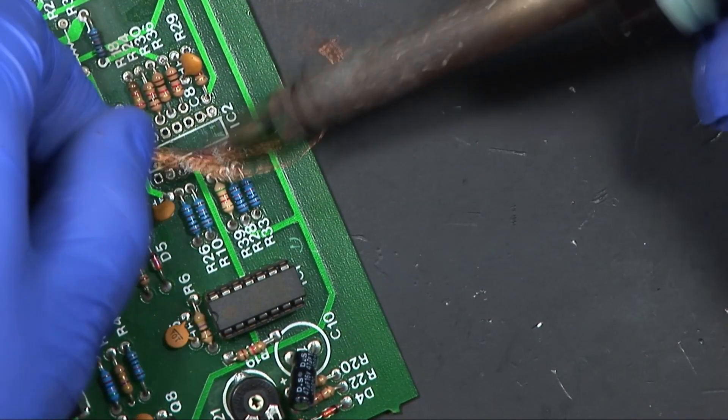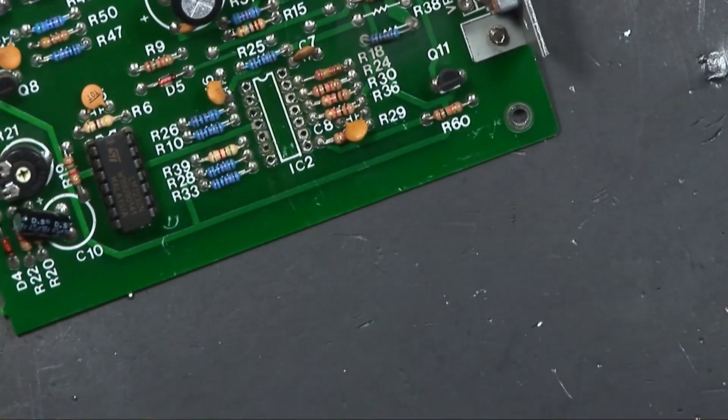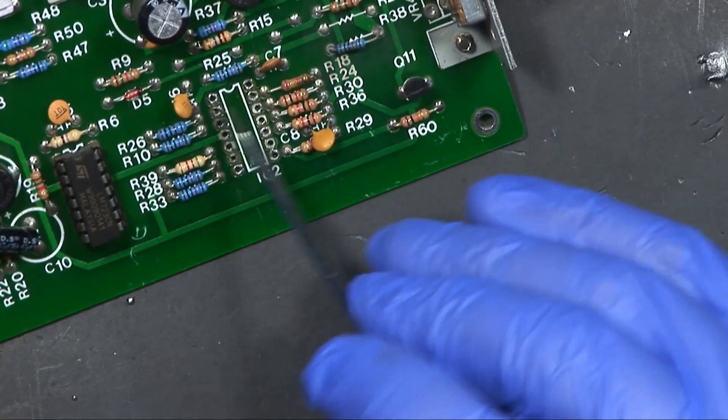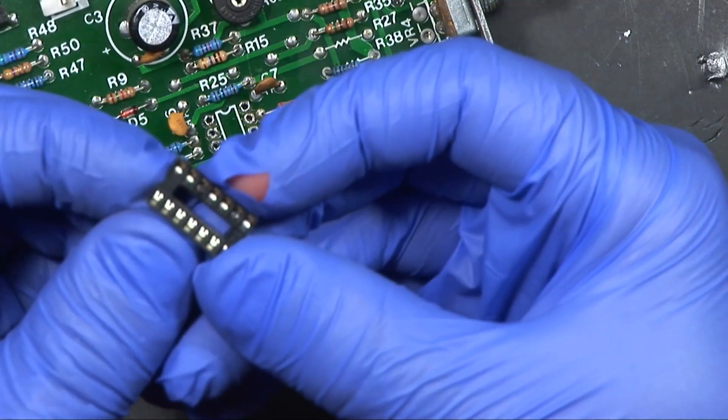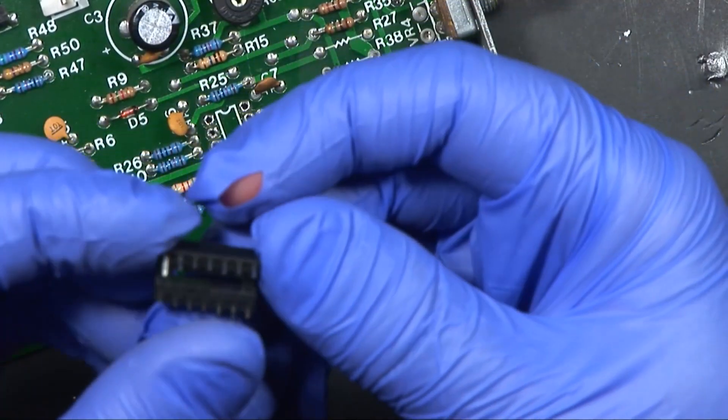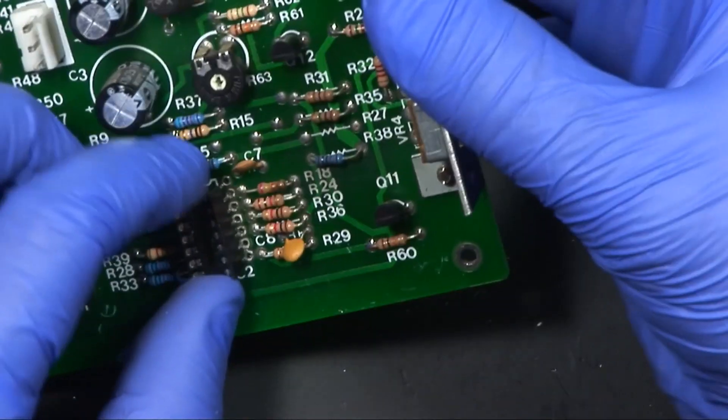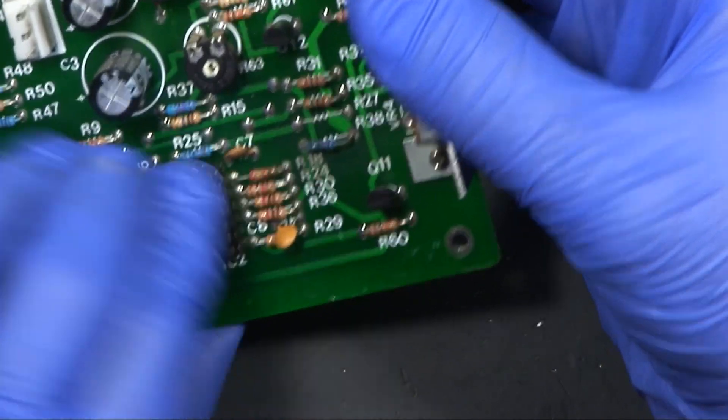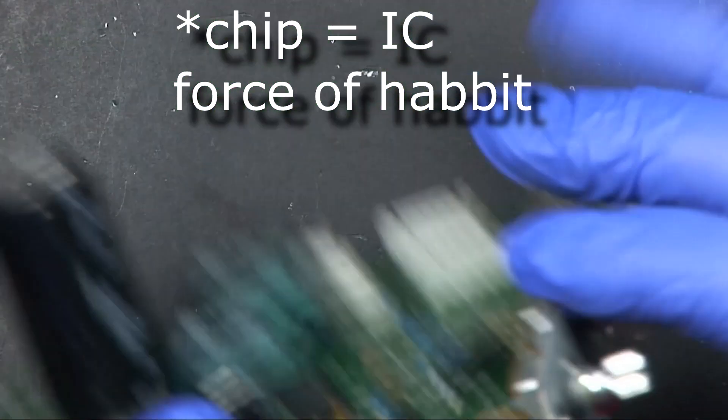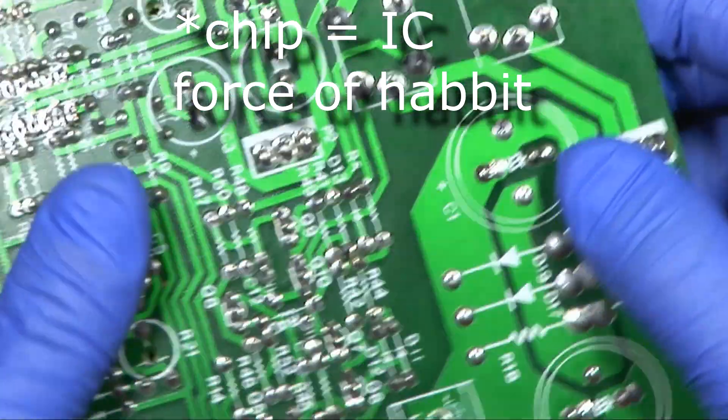If you notice at the very top there's this dip that indicates where the front of the chip is and the socket also has that dip. It really doesn't matter which way you put the socket in as long as the chip is actually placed in the right direction.